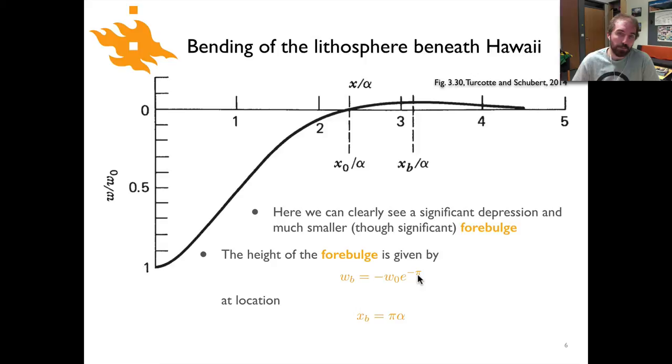We can calculate the height of the four bulge which is this wb term as being minus w naught times e to minus pi. And the position where the four bulge will be located is simply pi times alpha. So you can see why this alpha term, this flexural parameter, is kind of a useful thing.